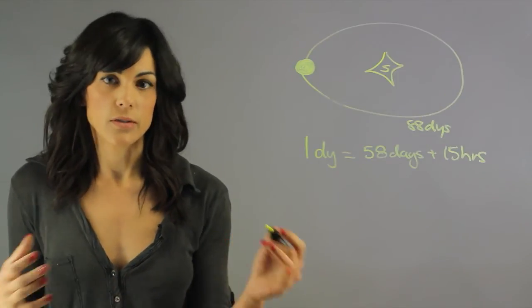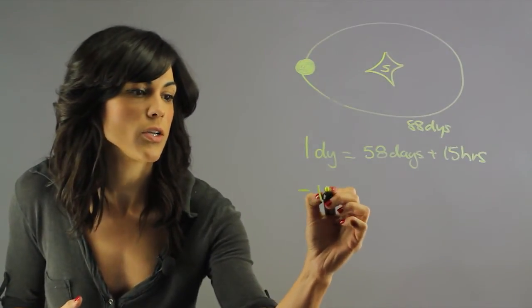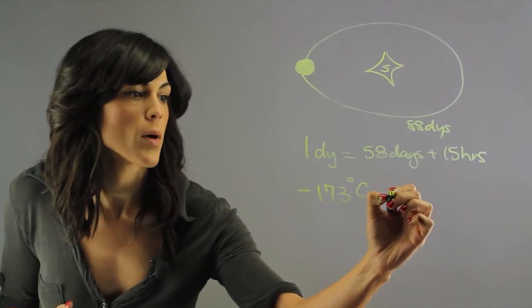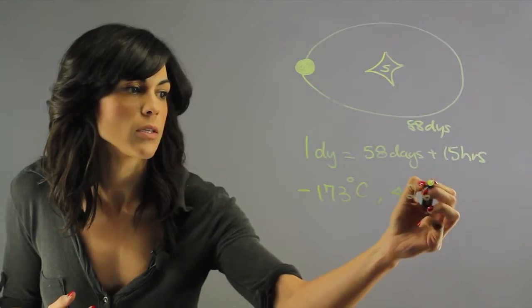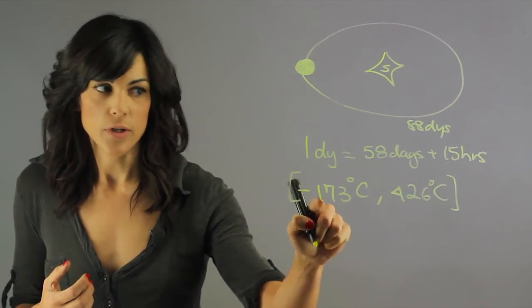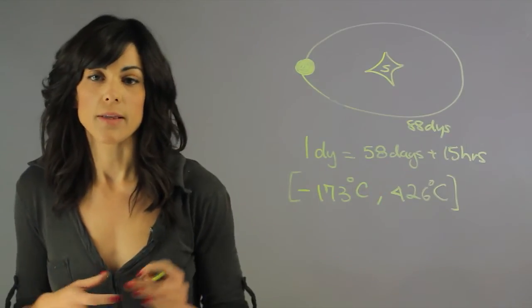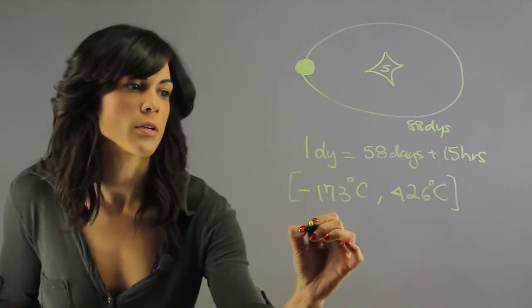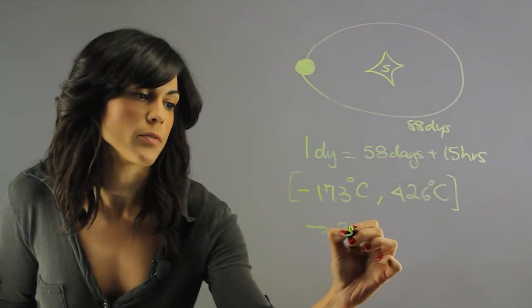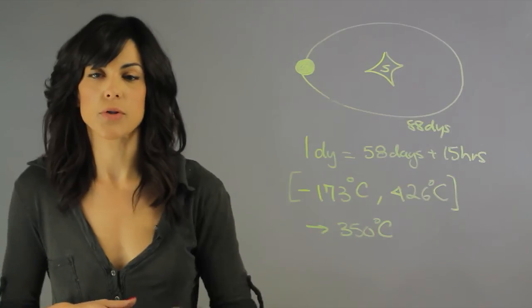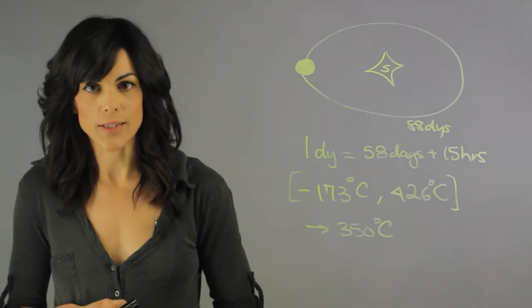So generally the extremes of Mercury's temperature is minus 173 degrees Celsius to about 426 degrees Celsius. Now this is the nighttime temperature and this is the daytime temperature. The daytime temperature, the mean, I mean the average for the daytime temperature is about 350 degrees Celsius and that's the mean temperature of Mercury during the daytime.